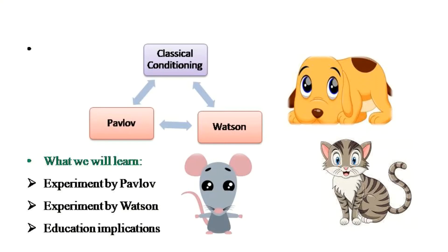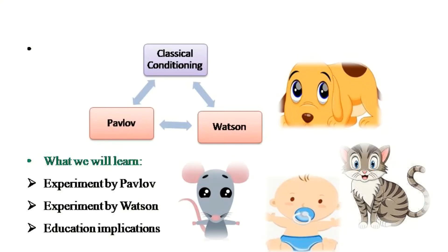Watson and Pavlov conducted many experiments on animals to develop this theory, and it went even to the extent that Watson conducted an experiment on a human child. First, we will learn the experiment done by Pavlov, and then we will move to Watson.